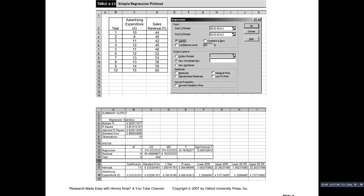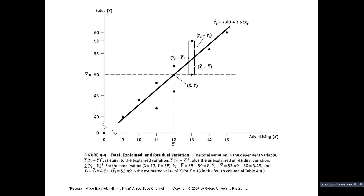The p-value of 0.001428 shows that the F-statistic is highly significant, indicating that the overall model is very significant. This is the regression line based on the earlier regression. The estimated equation is Y-hat equals 7.60 plus 3.53 X_t, which means that if advertising expenditure is zero then the firm's average sales revenue is 7.6 million dollars, and the coefficient of 3.53 means that if advertising expenditure increases by 1 million dollars then the firm's sales revenue will increase by 3.53 million dollars.